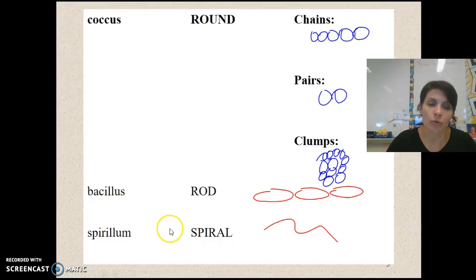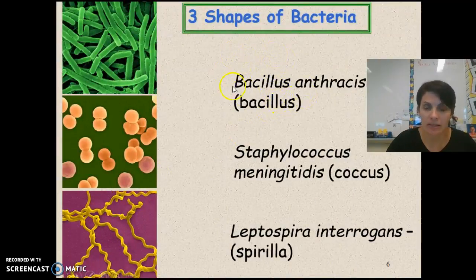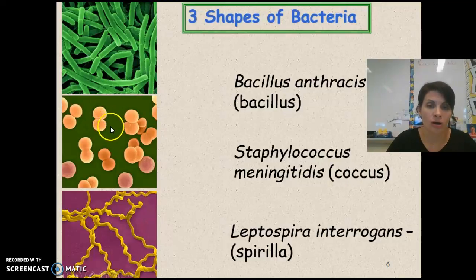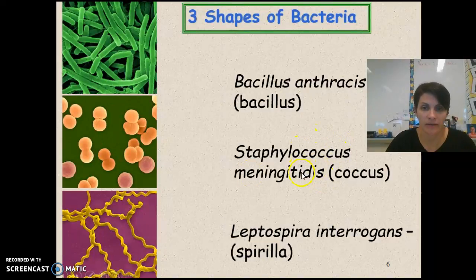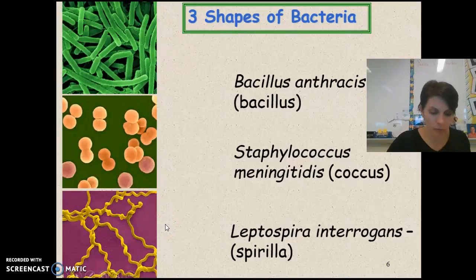The reason these scientific names are important is that when we look at actual bacteria names, we can tell the shape. Bacillus tells us it's rod-shaped bacteria. Staphylococcus, which causes meningitis — an infection of your spinal fluid — consists of paired round bacteria, and we know it's round because of the coccus suffix. We know rod shapes from the name bacillus, and spirilla tells us a bacteria is spiral-shaped.